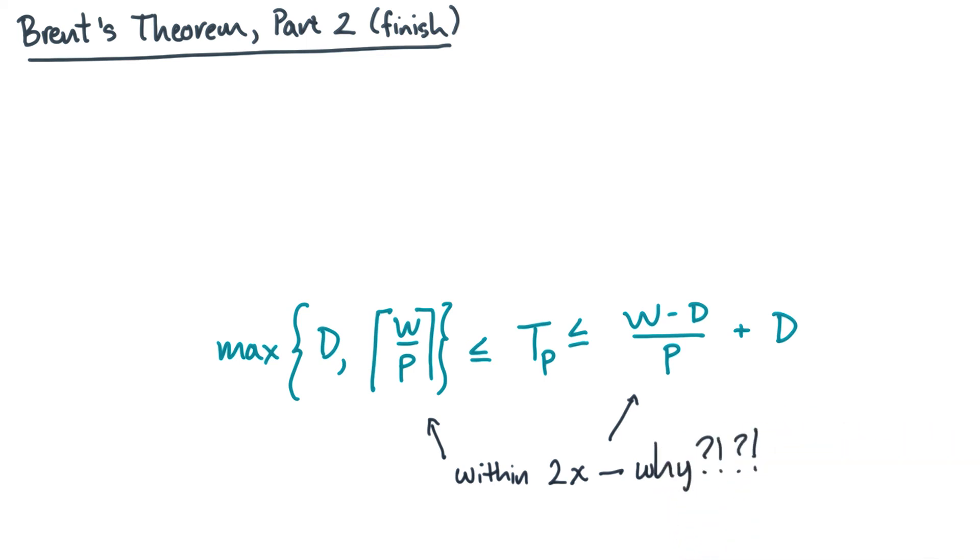In any case, what this means is that you may be able to execute the DAG in a time that is less than what Brent predicts. Though, of course, you can never go any faster than the lower bound, at least in theory. Let's see how this works.